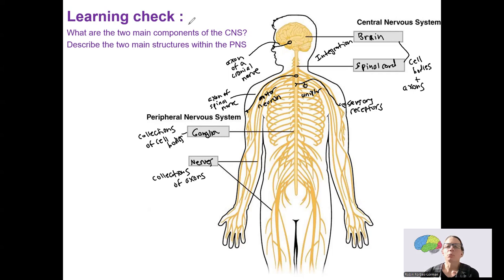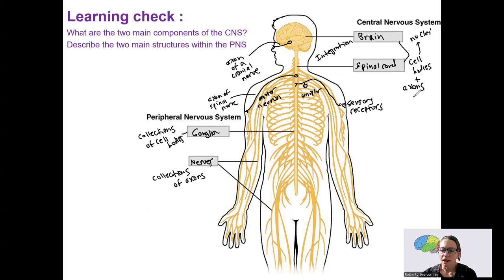Remember, we also have talked about collections of cell bodies in the brain — those are called nuclei, brain nuclei. The axons are called tracts.